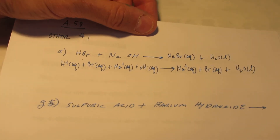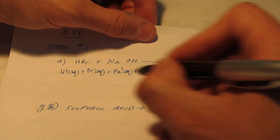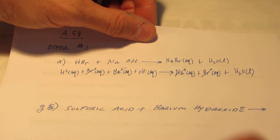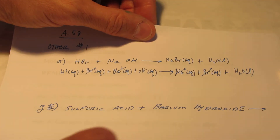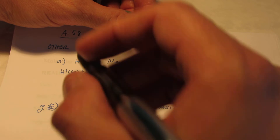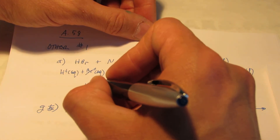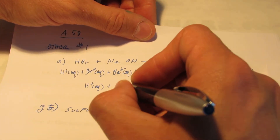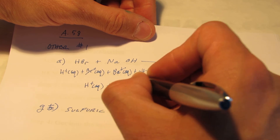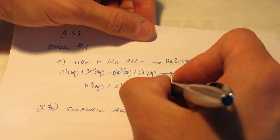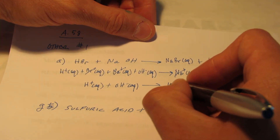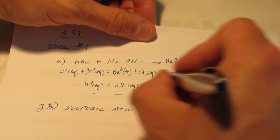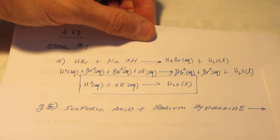Our spectators — we can get rid of Br⁻ and Na⁺. Those are our spectators. Whatever is left is our net ionic. So we have a hydronium ion H⁺, a hydroxide ion AQ, and water. And there we go — we just finished letter A.